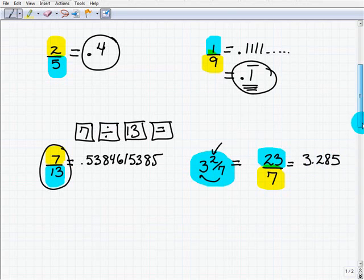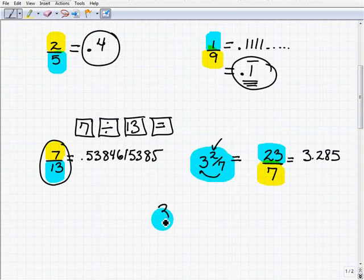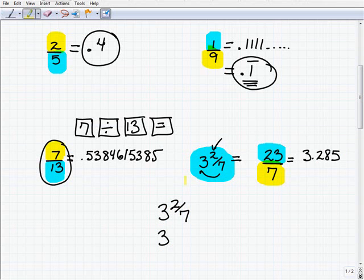Now, another way you could have done this is saying, okay, I have 3 and 2/7. You can write the 3 right here, and now let's just go ahead and change the 2/7 part into a decimal. So that's going to be 3 point. Now take 2/7, 2 divided by 7, and you get .285. You can just write that right here, .28571, et cetera.